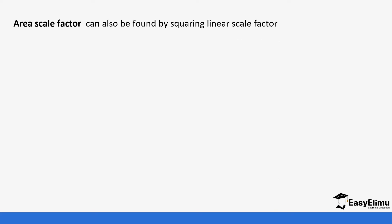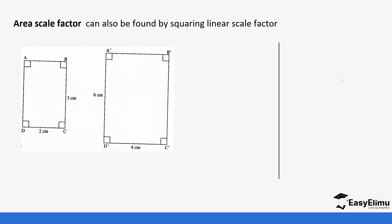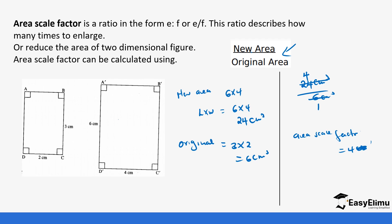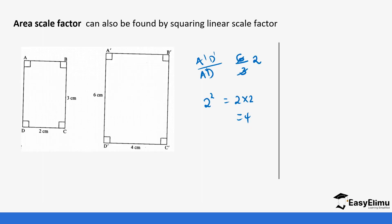Area scale factor can also be found by squaring the linear scale factor. As long as you have one length of the image and the corresponding length of the object, you can get the linear scale factor. For example, taking A'D' divided by AD gives 6 centimeters divided by 3 centimeters, which equals 2. If you square 2, that is 2 times 2, which gives us 4 — the same result as before. So you can see the relationship between linear scale factor and area scale factor.